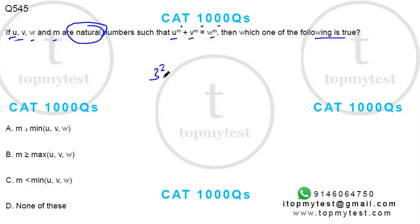Now I know 3 square plus 4 square equals 5 square. So this is u, v, w, and m. Right?